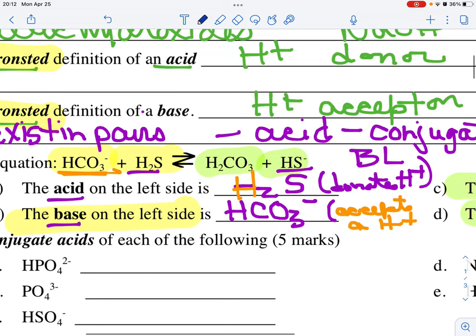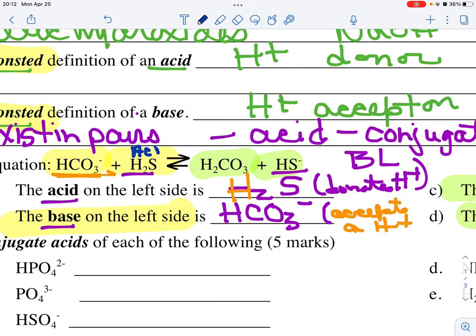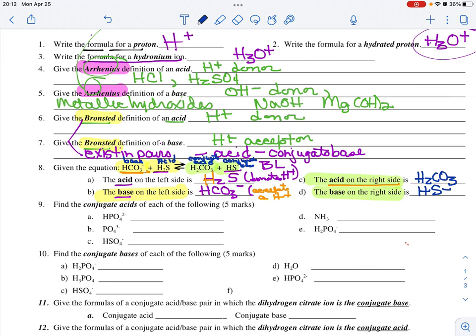Now above these, I'm going to write acid and I'm going to write base. Now this is my conjugate base. And this is my conjugate acid. It's my conjugate base and my conjugate acid.